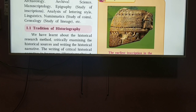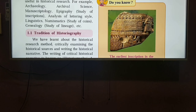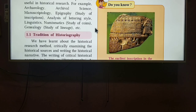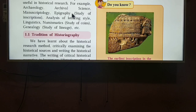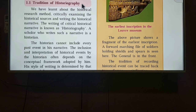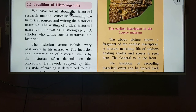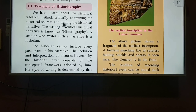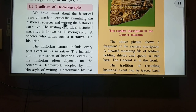Now if you look at 1.1, it talks about the tradition of historiography. What traditions do we need to follow to understand historical methods? We need to first understand that the historical research method needs to be critically examined. Critically examining is like taking a patient to the doctor — you find out the blood group, the kind of sickness, you critically examine the details so the treatment can be done.